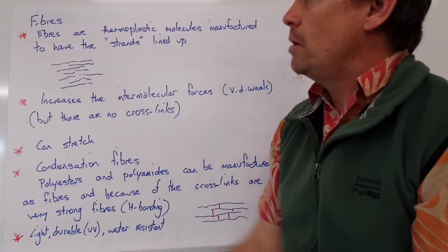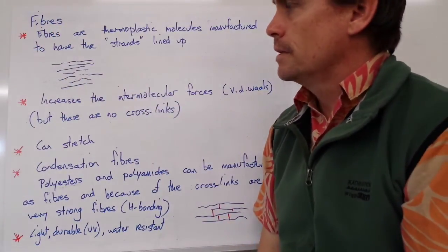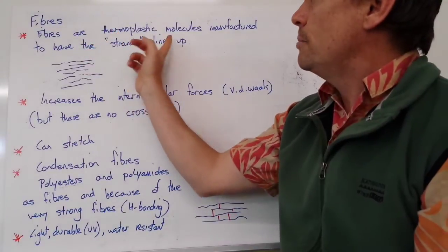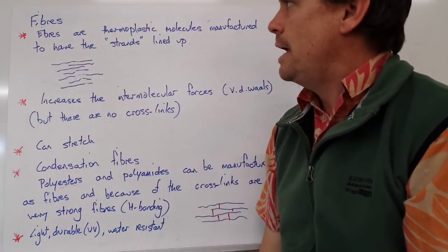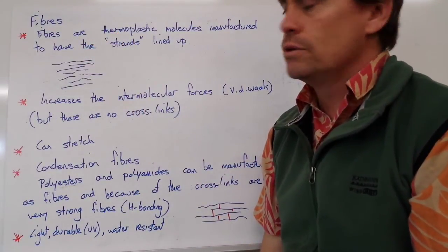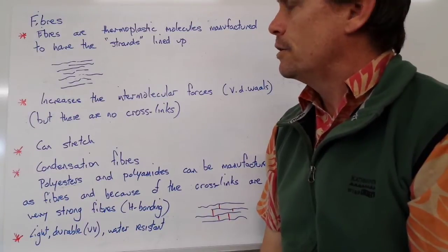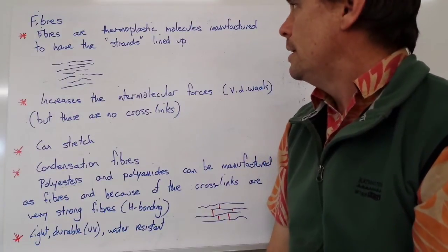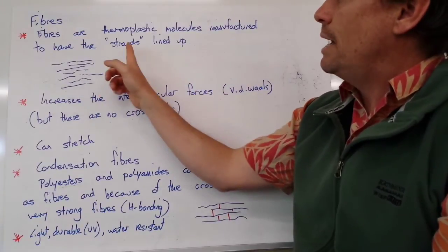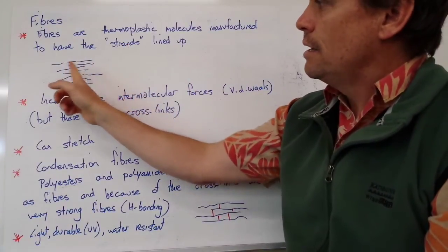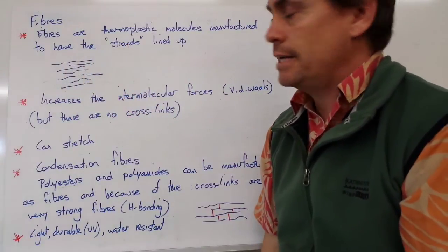Our third type of polymer is a fibre. Fibres are thermoplastic molecules, so they have very few intermolecular forces occurring between polymer molecules. But they can be manufactured in such a way that the strands line up in the same axes.